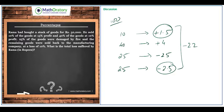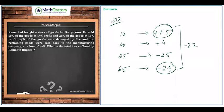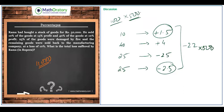Totaling up: profits are 1.5 + 4 = 5.5 rupees, losses are 25 + 2.5 = 27.5 rupees, giving a net loss of 22 rupees. If goods were worth 100 rupees and we have a 22 rupee loss, that's a 22 percent loss. Since the actual total is 50,000, we scale by 500: 22 × 500 = 11,000 rupees loss. The answer is a loss of rupees 11,000.